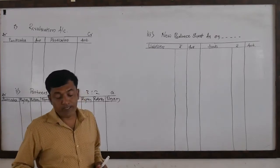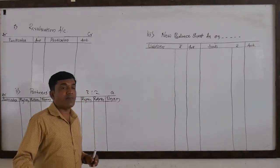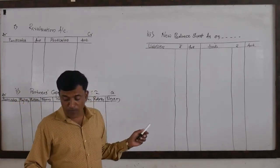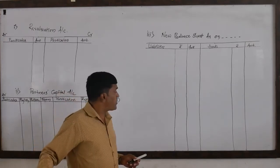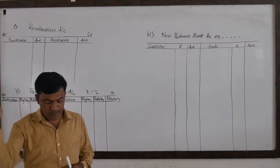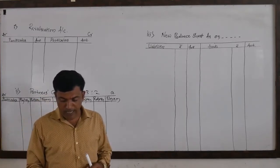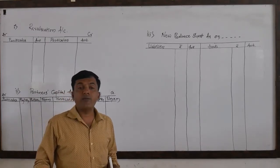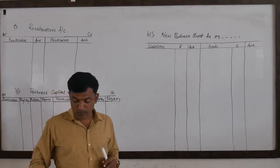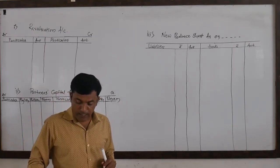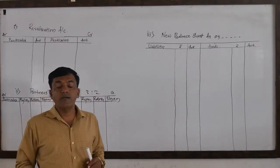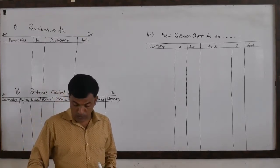On 1st April 2018, they admit Sham as a new partner and offered him a 1/5th share in future profits on the following terms. He has to bring rupees 10,000 as his capital and rupees 5,000 towards goodwill. So he needs to bring 10,000 cash for his share of capital and rupees 5,000 for the sake of goodwill.